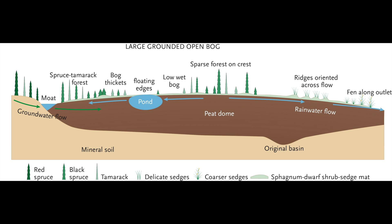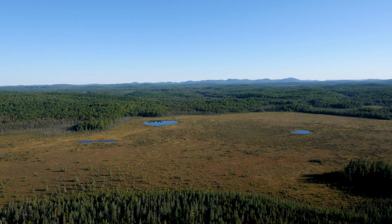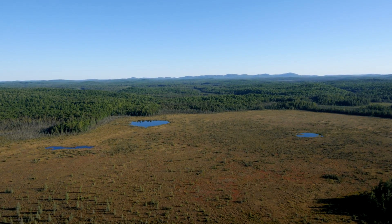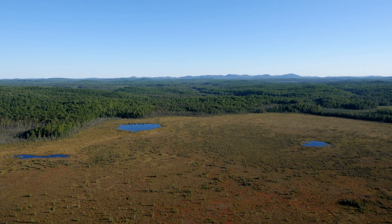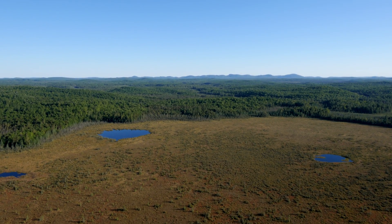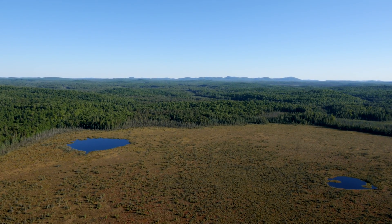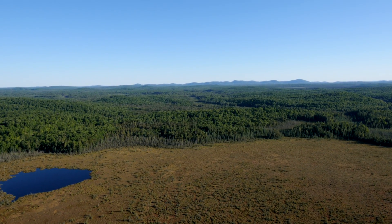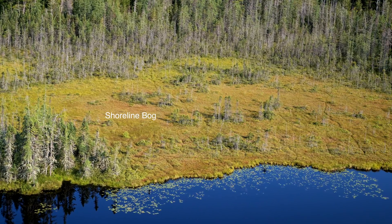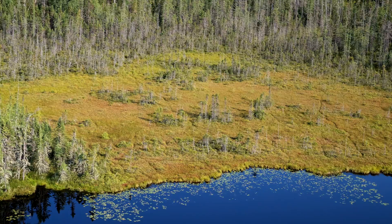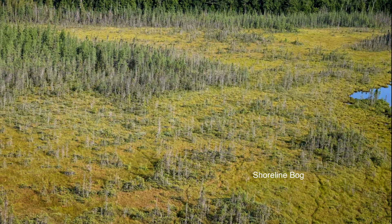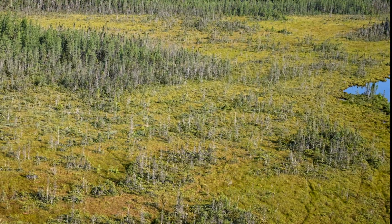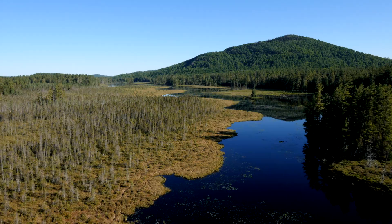Bogs are peatlands that receive their water and nutrients primarily from precipitation, have an acidic pH less than 4.8, are separated from groundwater, and are dominated by sphagnum moss and heath shrubs like leatherleaf, Labrador tea, sheep and bog laurel, and bog andromeda. Trees such as black spruce occur in bogs, but are usually restricted to the drier edges or are severely stunted in growth. Bogs often occur in isolated depressions but can develop on large waterlogged flat areas. Bog variations include shoreline bogs, which are formed like other bogs but are located alongside lakes or alluvial river corridors. Shoreline bogs are explored in greater detail in the video Bog Ponds and Shoreline Bogs.